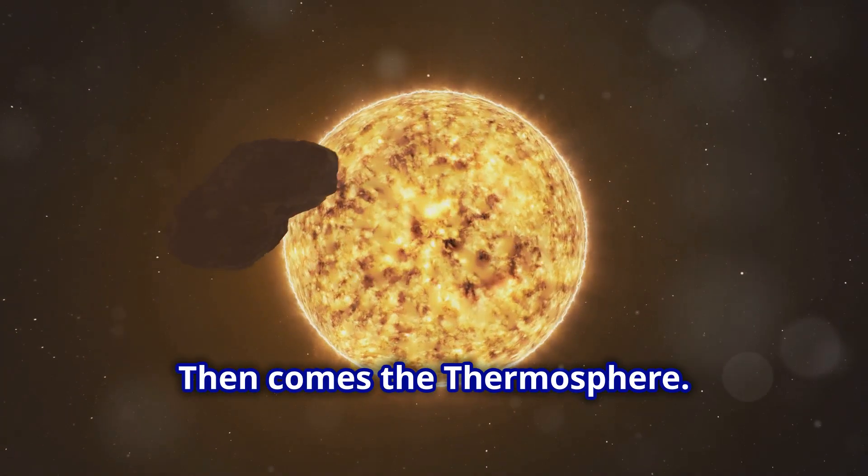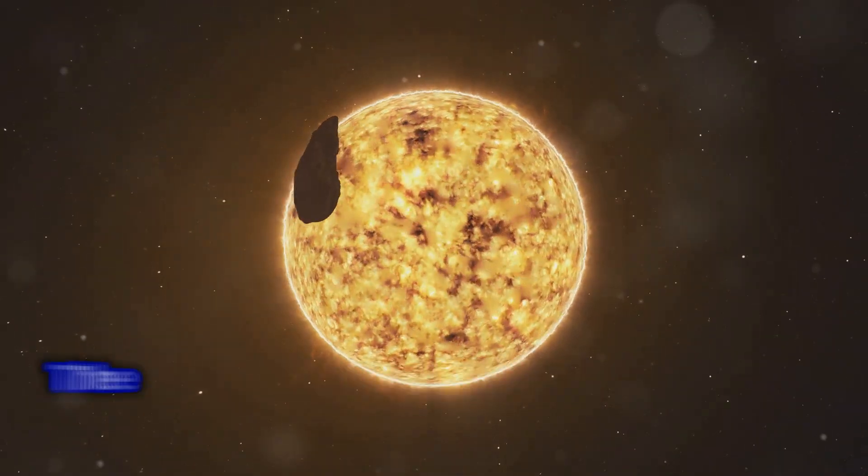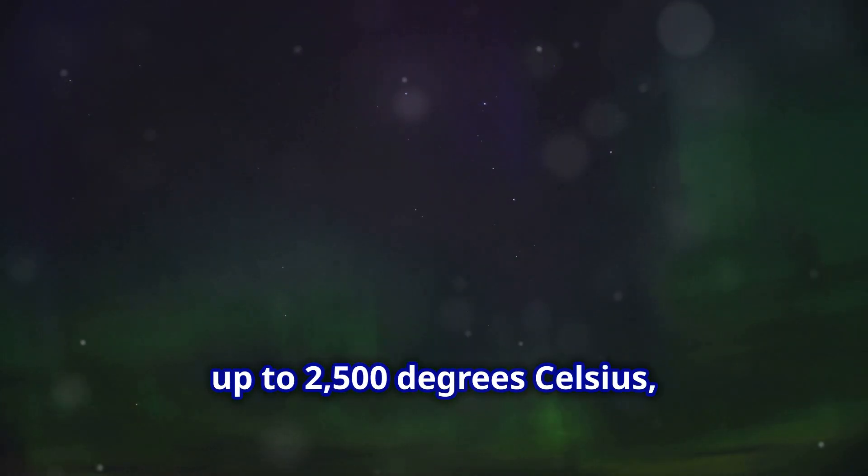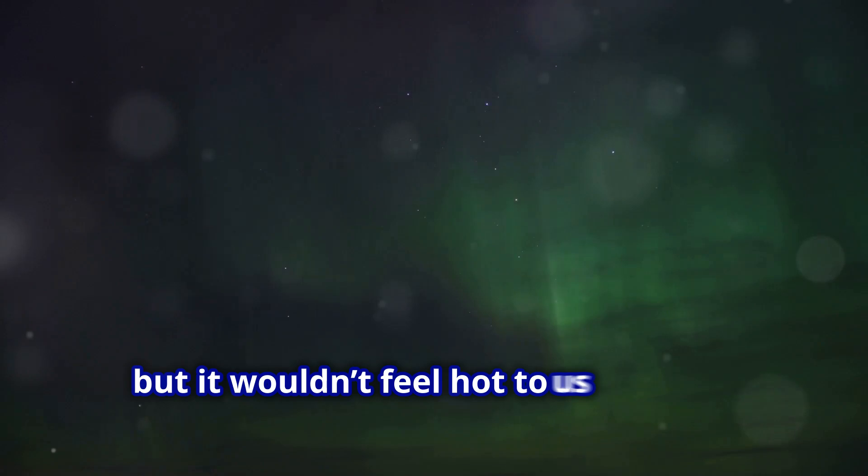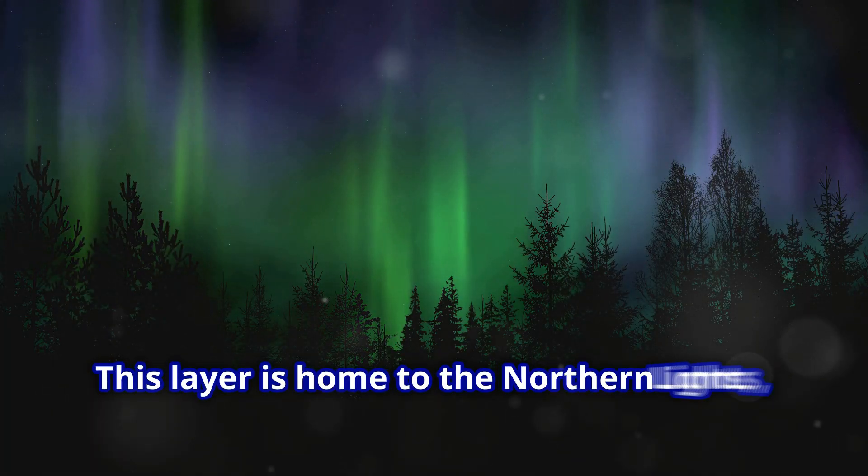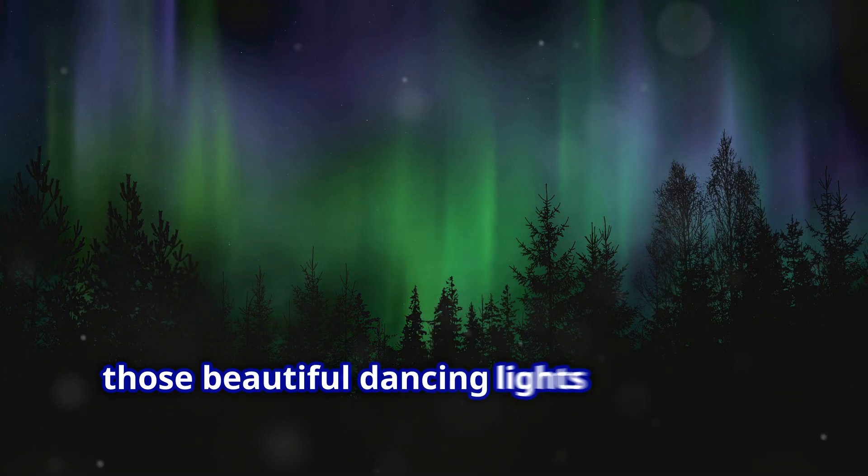Then comes the thermosphere. It's mega hot here. The thermosphere can reach temperatures up to 2,500 degrees Celsius, but it wouldn't feel hot to us because the air is so thin. This layer is home to the northern lights, those beautiful dancing lights in the sky.